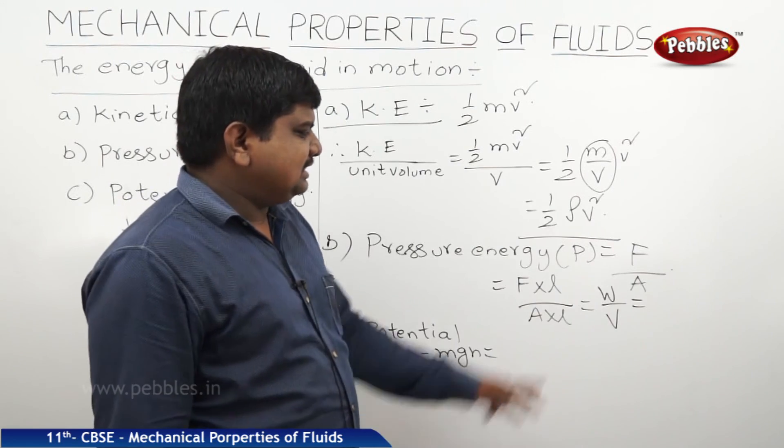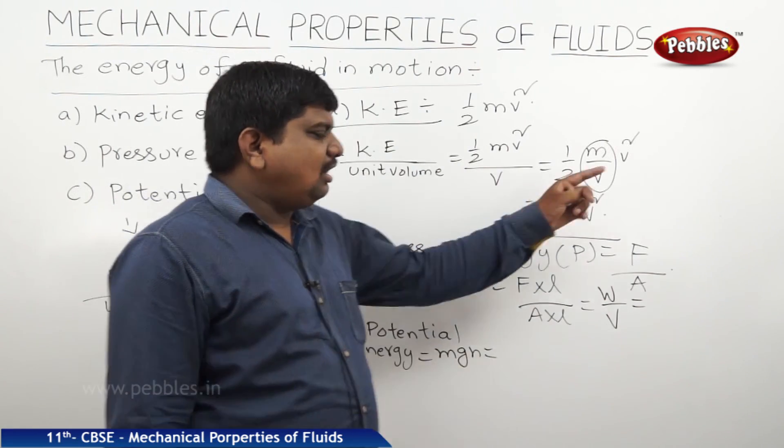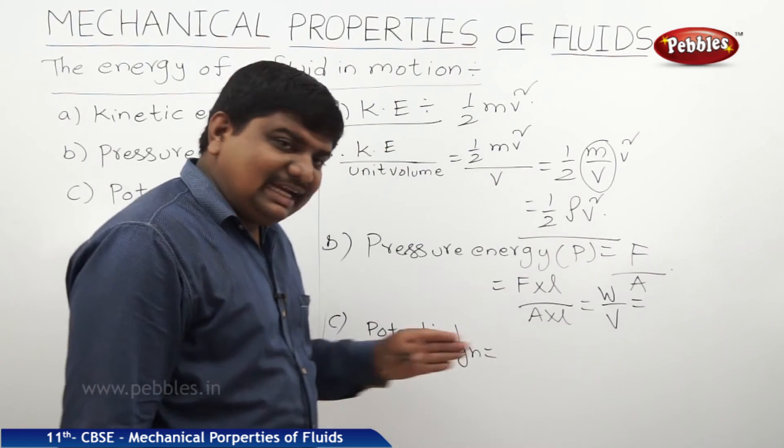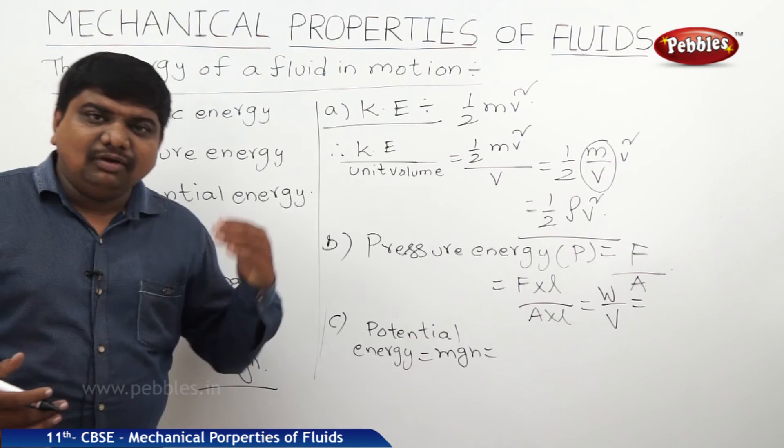Pressure energy per unit volume is work done by volume, and kinetic energy per unit volume is half rho V square. These three types of energies, as a whole, are useful to explain Bernoulli's theorem.